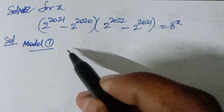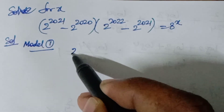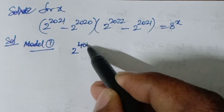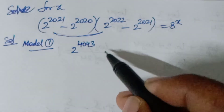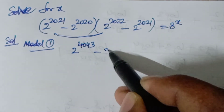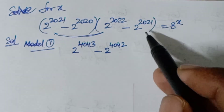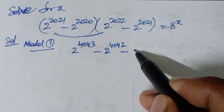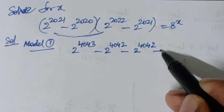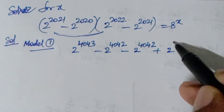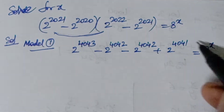In the first method, I am multiplying both terms. So 2 to the power of 4043 multiplied by the first term, and then minus 2 to the power of 4042, minus 2 to the power of 4042, plus 2 to the power of 4041, is equal to 8 to the power of x.